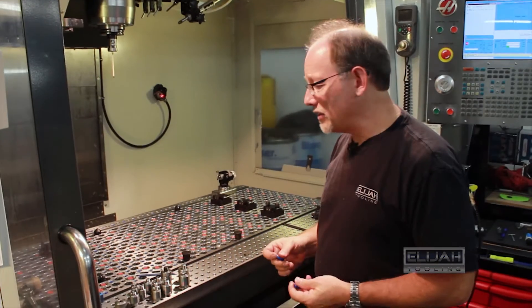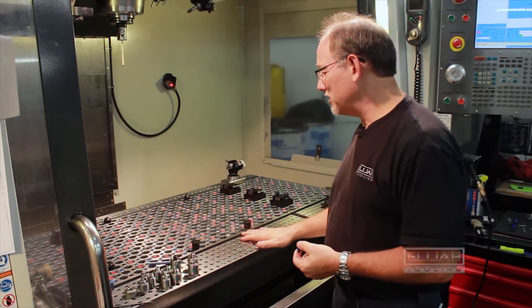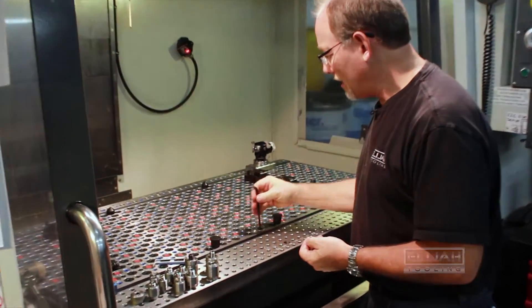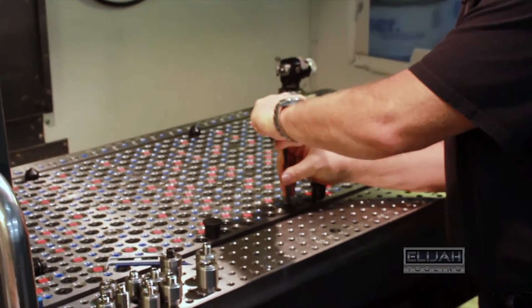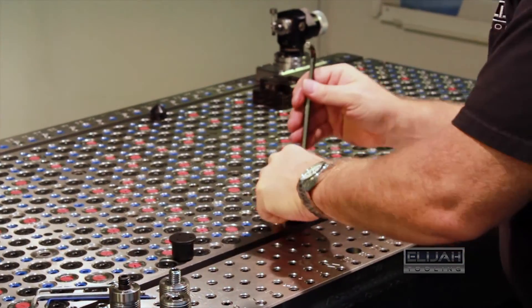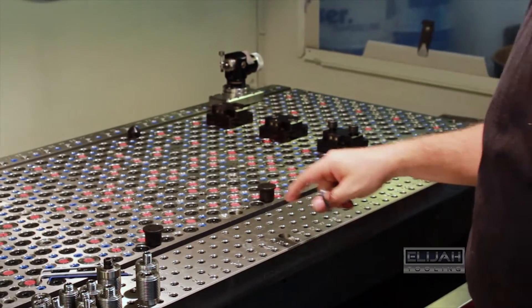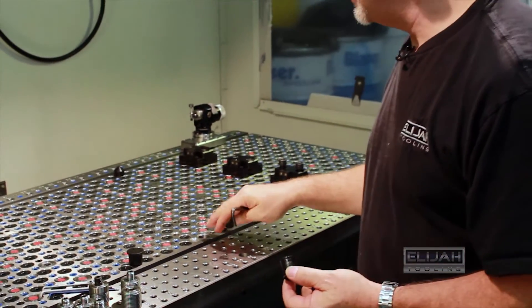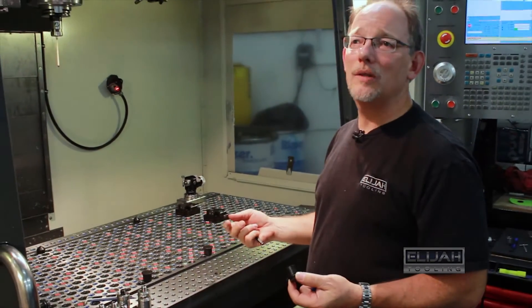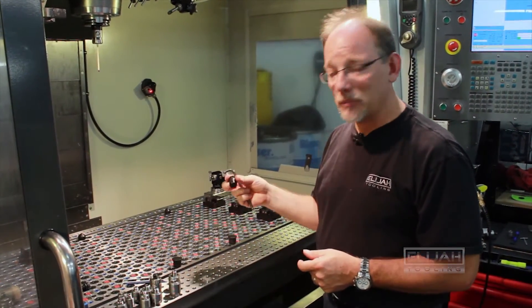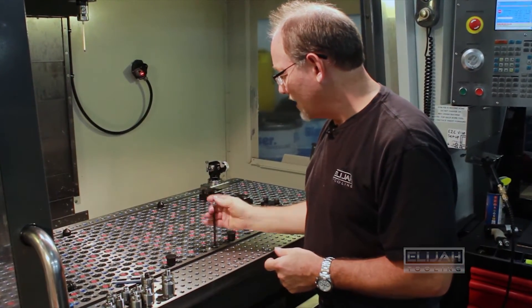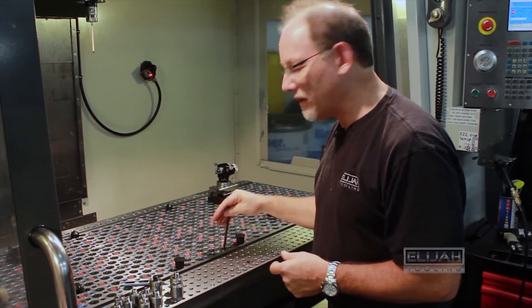A couple other features I'd like to talk about on the modular fixture—you may be wondering about these black plugs. These plugs are plugging the invertible fastener hole. As much as we would like our customers to populate everything on their plate, they don't have to do that. We have the plastic plugs that they can screw in, closes the hole up, and so they don't have to use a fastener at every location.